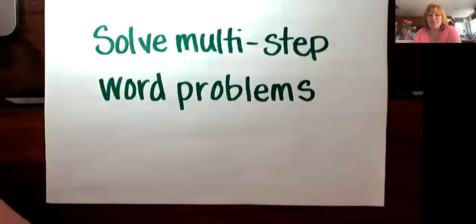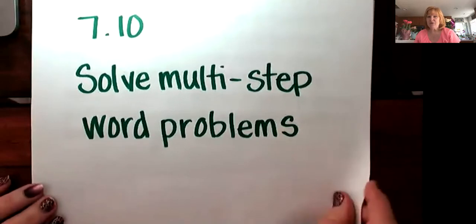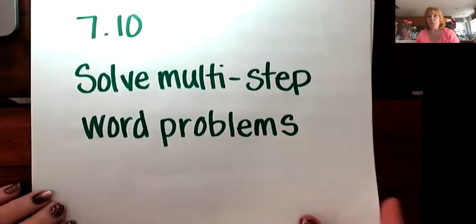Hey, fourth grade friends. It's time for math again. Now we're going to be doing lesson 10 of module 7. We're going to be using conversions and looking at them in the context of word problems — what needs to happen first and next. So we're going to be combining our knowledge of conversions and our knowledge of multiple step word problems to answer some of these questions. Here we go.